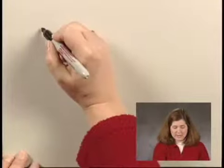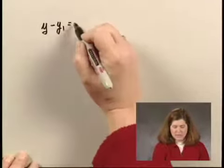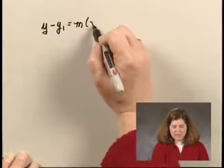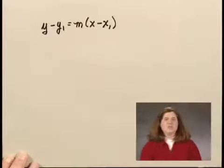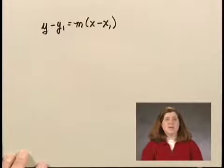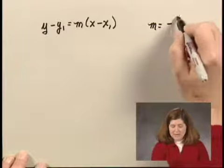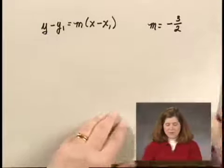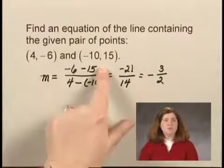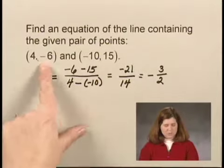That equation is y minus y₁ equals m times (x minus x₁). In order to use this, we need a point and the slope. The slope we know is -3/2. We're given two points on the line, and we can choose which one we want to use. Let's use the one with the smaller numbers: (4, -6).